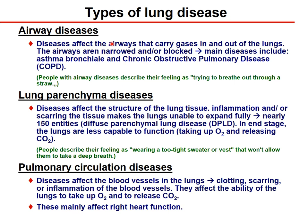Looking at different types of lung diseases, we can categorize them. Diseases that affect the airways are usually obstructive diseases — the airways carrying gas in and out of the lungs are narrowed or completely blocked. The main diseases include asthma bronchiale or chronic obstructive pulmonary disease. These patients usually describe their feeling as trying to breathe out through a straw — it is difficult to exhale.